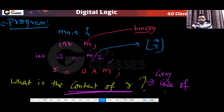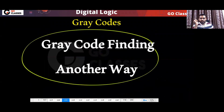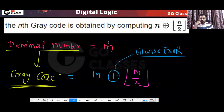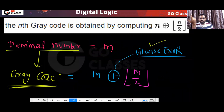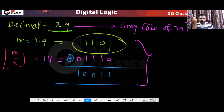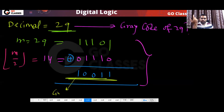So like this they can ask — this is the beauty of this alternative method. Gray code finding alternative method: if you have any decimal number M and want to find the Gray code, very simply, M bitwise XOR with M divided by 2 gives you the result. Like this — 29 bitwise XOR with 14 — this will be the Gray code of 29.